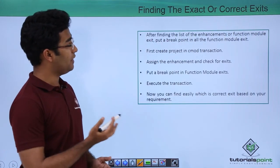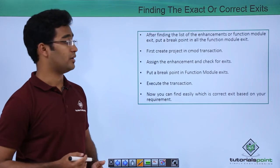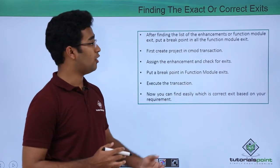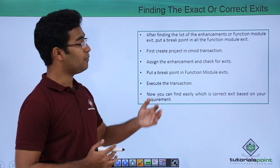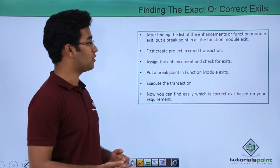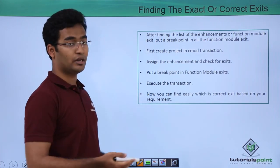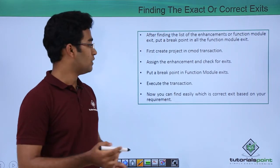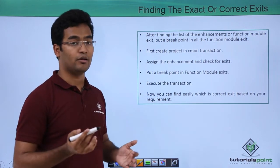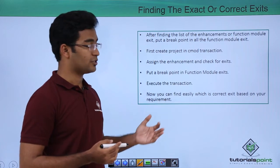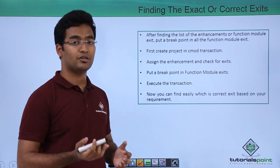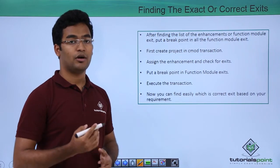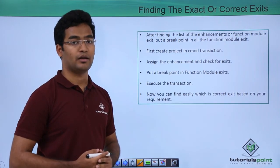Now let us see how to find the exact or correct exits. After finding the list of enhancements of function module exits, we put a breakpoint in all the function modules. Then we create a project in CMOD transaction, assign the enhancement, and check for the exit. Then we execute our transaction. Wherever our breakpoint is stopping, that particular function module is our exit. Now let us see all these things practically.